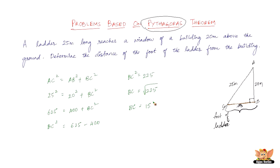The distance of the foot of the ladder from the building is exactly 15 meters. This problem is as simple as this — no complications. We are not yet into the advanced level of Pythagoras theorem; we will do so in forthcoming videos. But before that, let's quickly solve another problem.